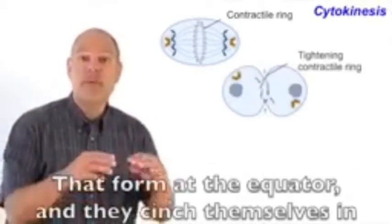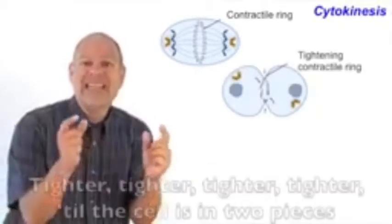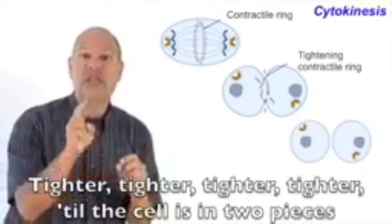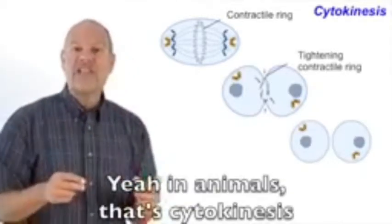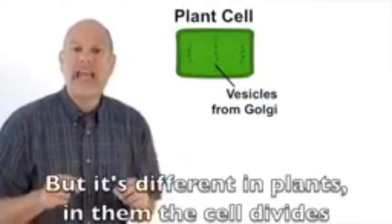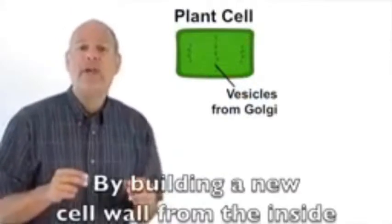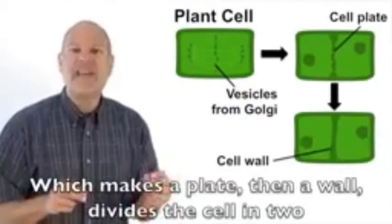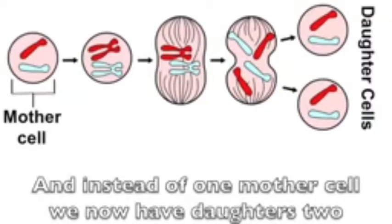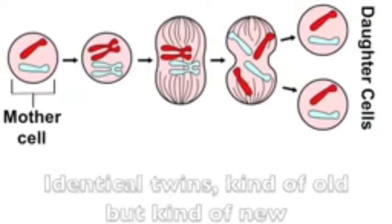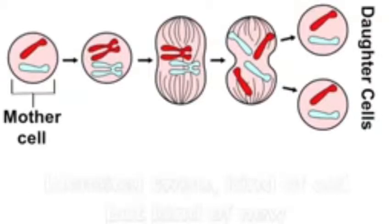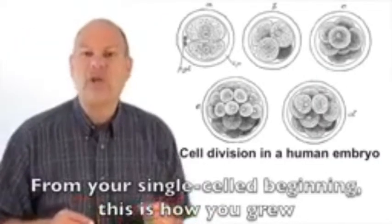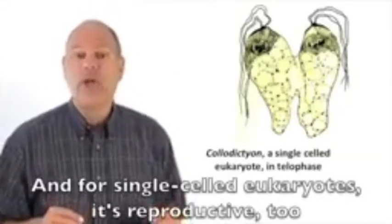In animal cells, a ring of microfilaments forms at the equator and cinches inward — tighter and tighter — until the cell splits into pieces. In animals, that's cytokinesis, but it's different in plants. In plant cells, the cell divides by building a new cell wall from the inside: vesicles with cellulose material form a plate, then a wall that divides the cell in two. Instead of one mother cell, we now have two daughter cells — identical twins, kind of old but kind of new. From your single-cell beginning, this is how you grew.